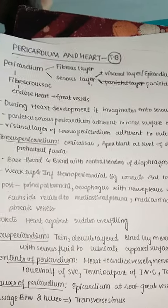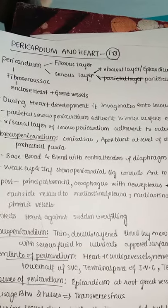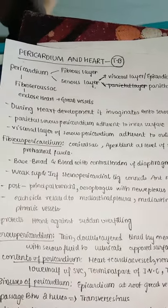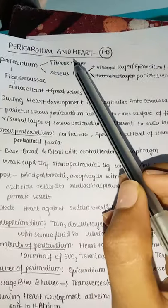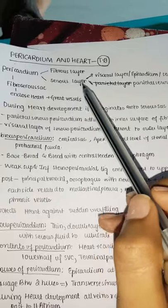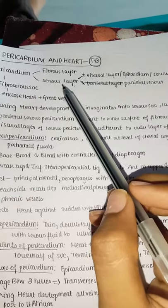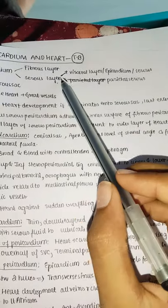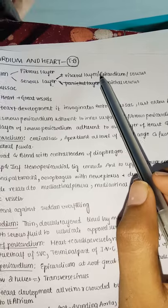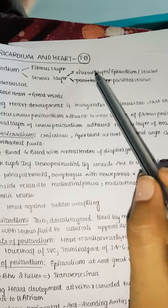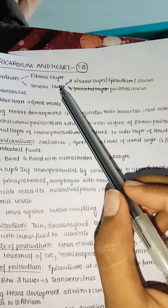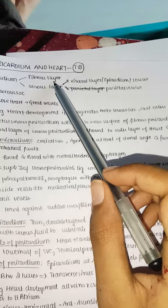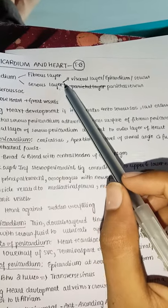Today we are going to start the topic of the pericardium and heart. The pericardium is made up of mainly a fibrous layer and a serous layer. The serous layer is actually the inner layer and is divided into the parietal serous layer and the visceral layer, which is also called the epicardium. The fibrous layer is the outer layer, also called fibrous pericardium, and the serous layer is called serous pericardium.